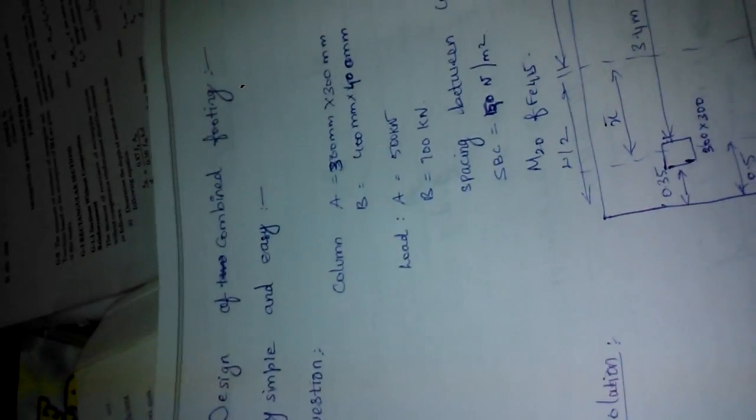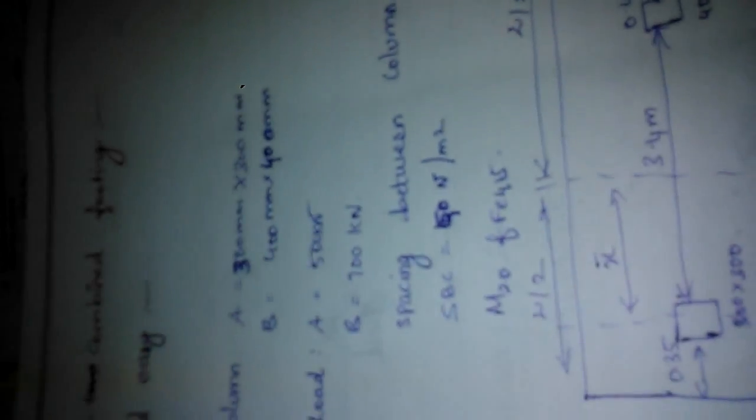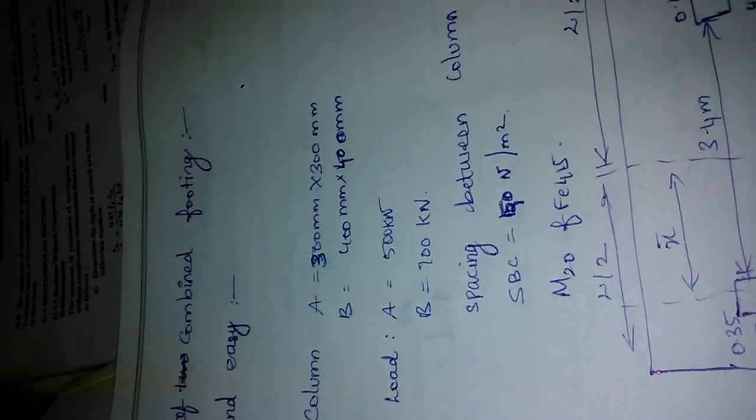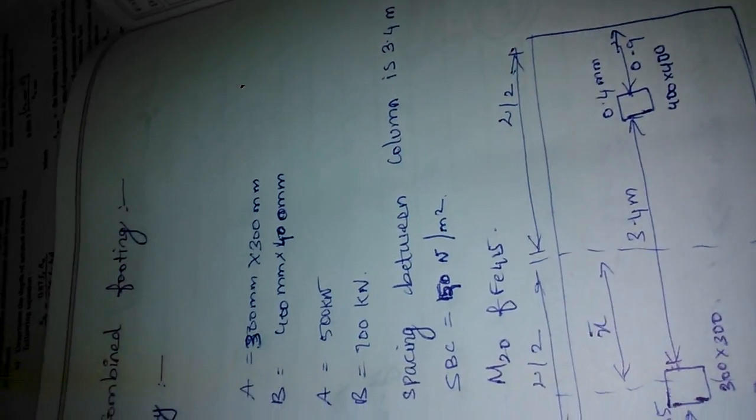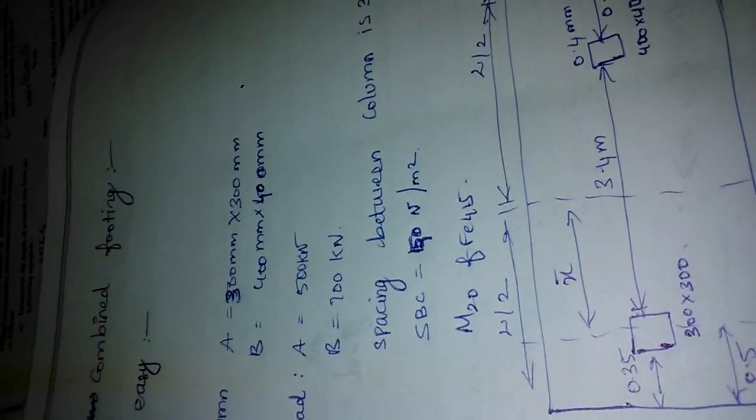First of all, we are designing a combined footings. It is very simple and easy. Column A is 300 mm and column B is 400 mm. The load carried by each column is 500 and 700. Spacing between the columns is 3.4 meters. So SBC is 150 N/mm2 and FE45 we are using.